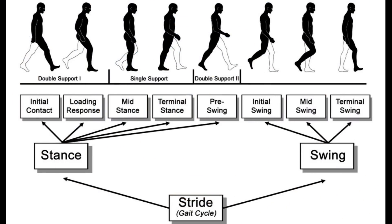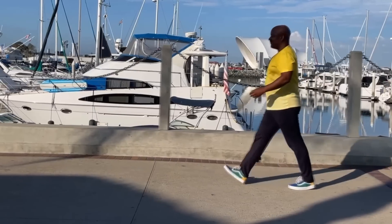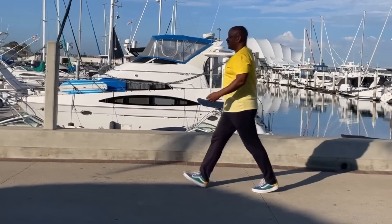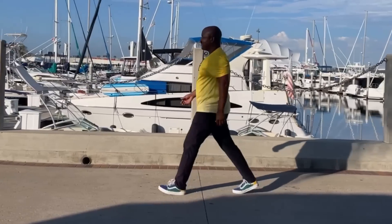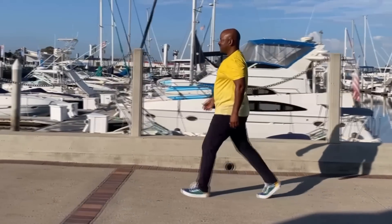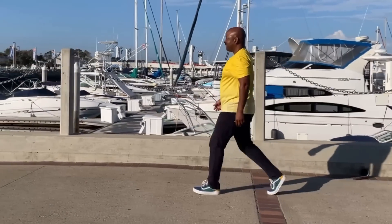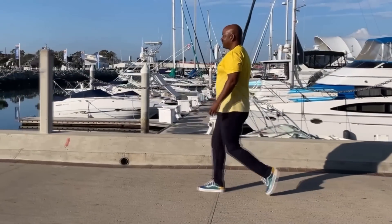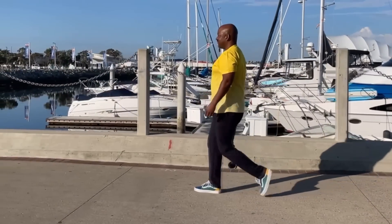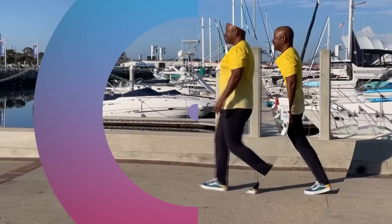The gait cycle describes the movement of one leg through a full stride, from initial contact of the heel to the next contact of the same heel. The gait cycle is broken down into the stance phase, 60% of the gait cycle, and the swing phase, making up 40%. The stance phase and swing phase are broken down further into sub-phases, some of which will be important to understand as you work on your walking technique.